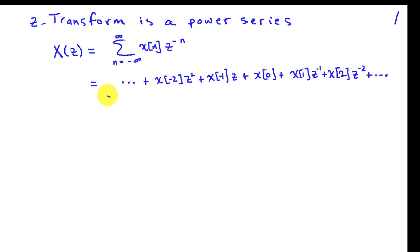We write X of Z equals the sum from N equals minus infinity to infinity, X of N, Z to the minus N. That's a power series. And it's useful to write out the individual terms in the power series to see how this is going to work.